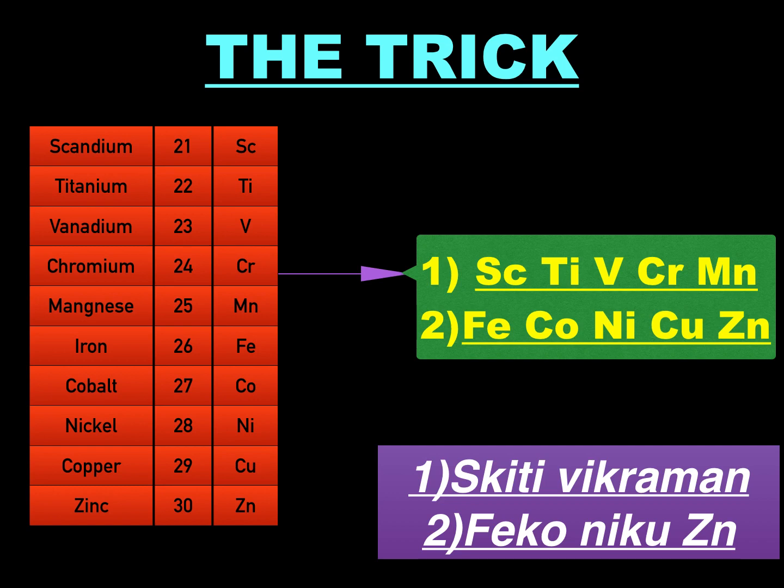The first group is Sc, Ti, Vikraman — that is Scandium, Titanium, Vanadium, Chromium and Manganese. Let's pronounce: Sc Ti Vikraman. And the second group is F, Co, N, Cu, Zn — that is Iron, Cobalt, Nickel, Copper and Zinc. Let's pronounce: Fe Co Ni Cu Zn.